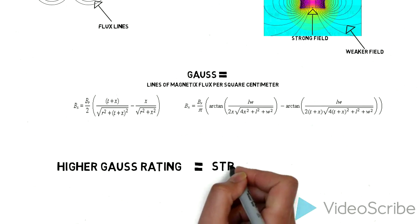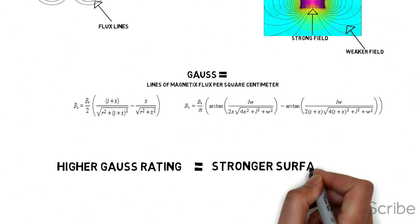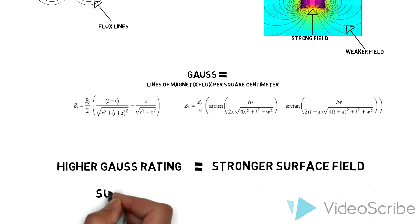Just remember, the higher the Gauss rating, the stronger the surface field. Also remember, the surface field doesn't necessarily correlate to pull force.